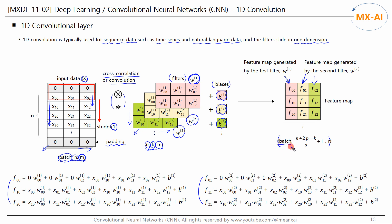The first dimension of the feature map is the batch size. The second dimension is expressed by a formula where P and S represent padding and stride value respectively. The third dimension is R, the number of filters. This is the final feature map — the output of the 1D convolutional layer — which is then fed into the next 1D convolutional layer or 1D pooling layer.